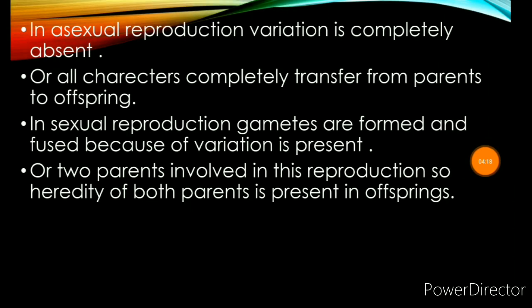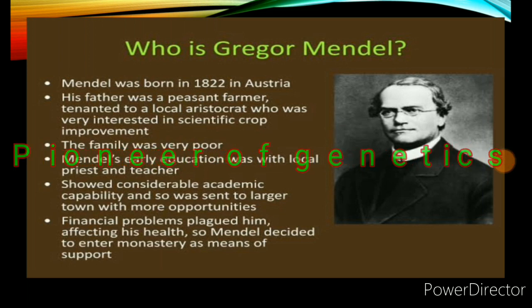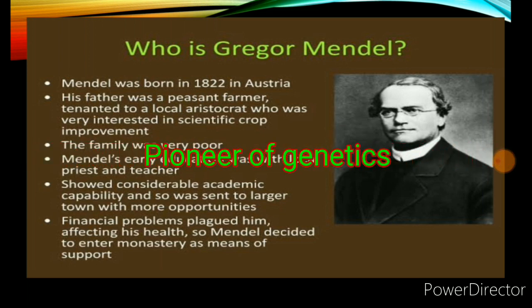The heredity concept and variation were first observed by Gregor Mendel. Mendel was born in 1822. In that period, the concept of chromosomes and DNA did not exist, yet the work he did as a scientist was remarkable. He is called the pioneer of genetics — meaning the foundation of genetics starts from his work. His father was a farmer.